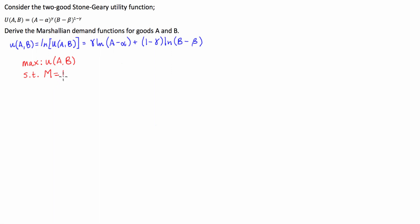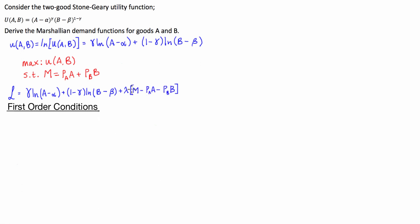That income constraint is the price of A times the amount of A we're going to buy plus the price of B times the amount of B that we're going to buy. Our resulting Lagrangian function L is given by our objective function plus our Lagrangian multiplier multiplied by our constraint. Following the Lagrangian, we have to set our first-order conditions: the partial derivatives of the Lagrangian with respect to goods A and B, as well as with respect to the multiplier, all equal to zero.